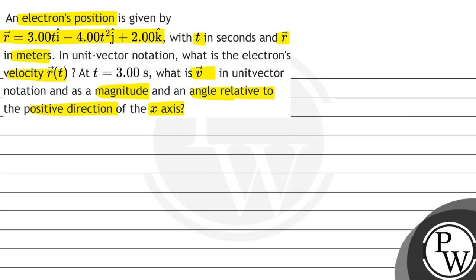So students, in this question, we have given the particle's position vector value as a function of time. This is 3t î minus 4t² ĵ plus 2k̂, and we have to find this particle's velocity vector as a function of time.